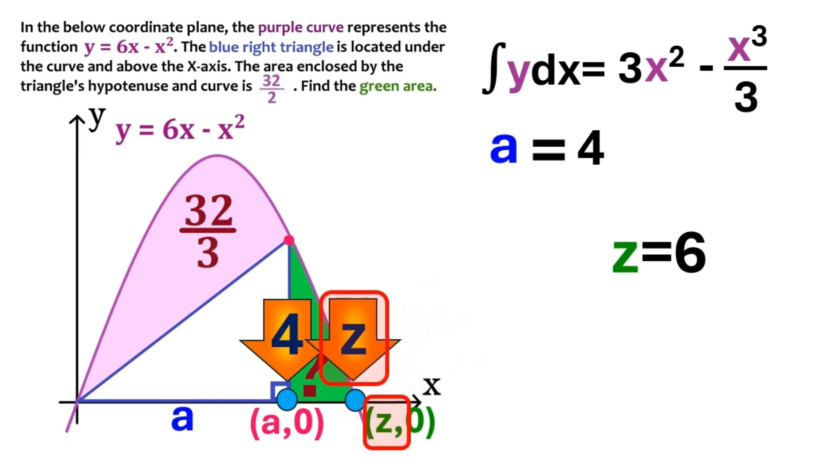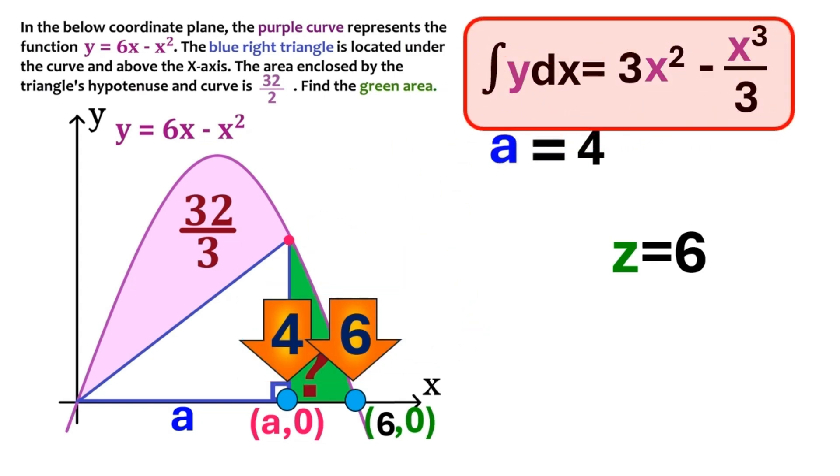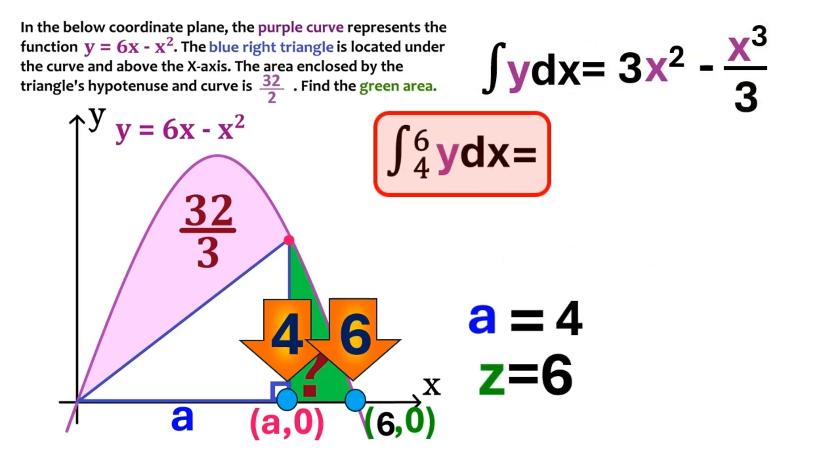And we can go ahead and replace these with that number. Now we have the start and end values for the green region. And it is time to put those values into this integral. We are calculating the integral from 4 to 6. Which equals the area of the green region.